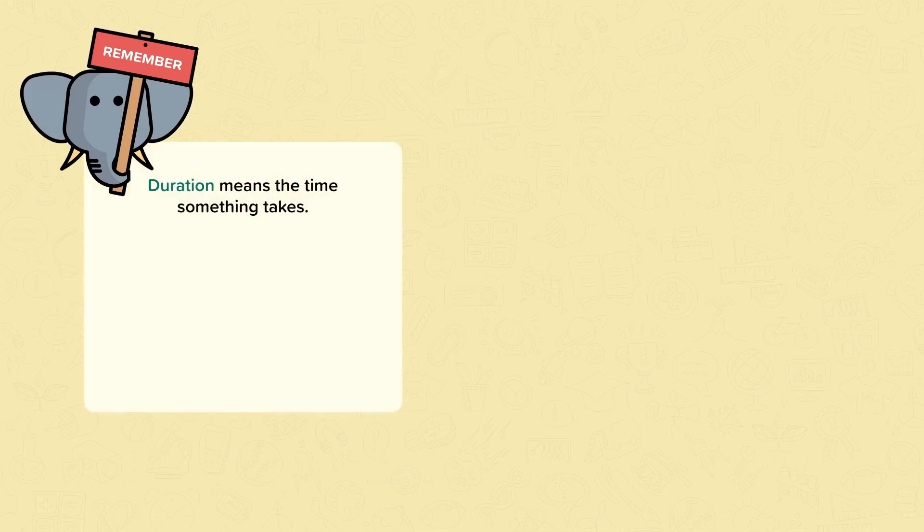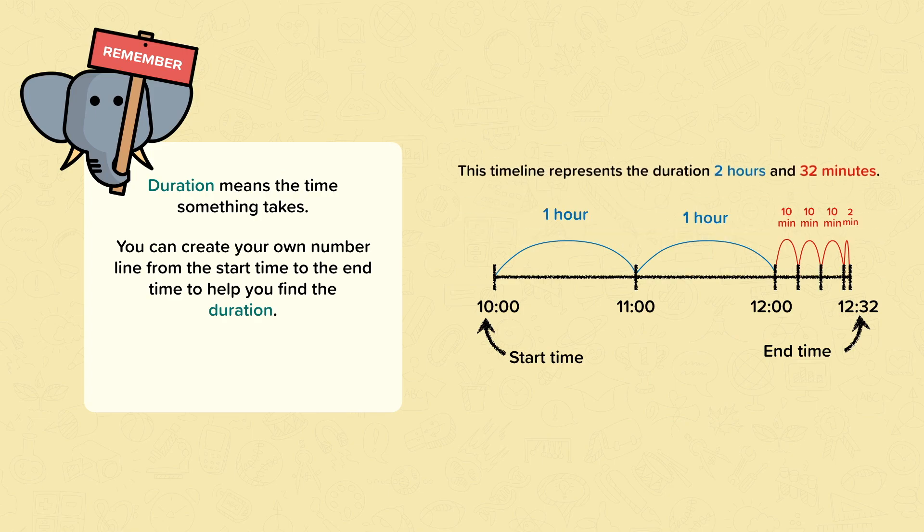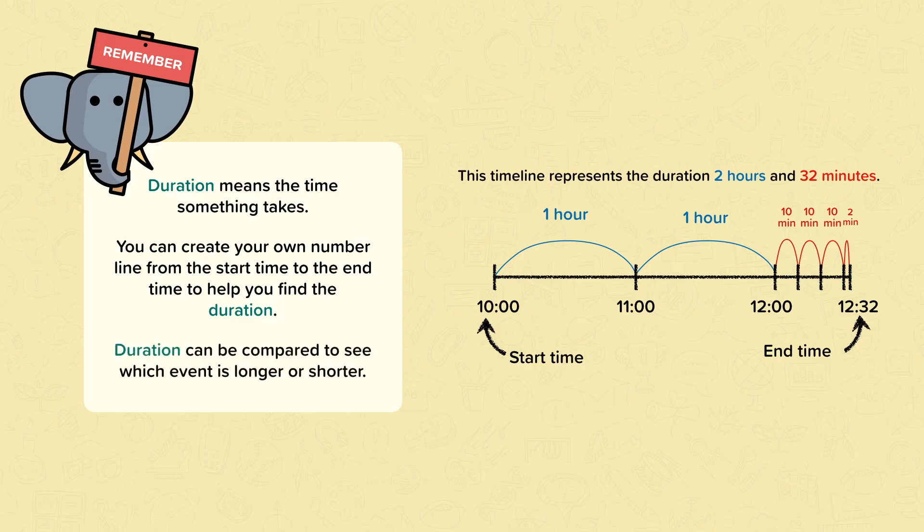Remember, duration means the time that something takes. You can create your own number line from the start time to the end time to find the duration. For example, this timeline represents the duration 2 hours and 32 minutes. Duration can be compared to see which event is longer or shorter.